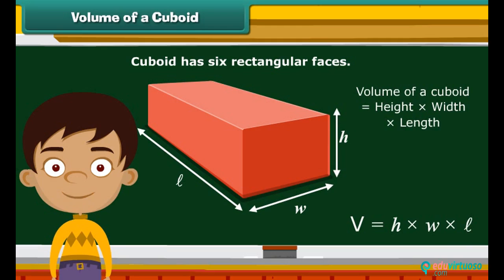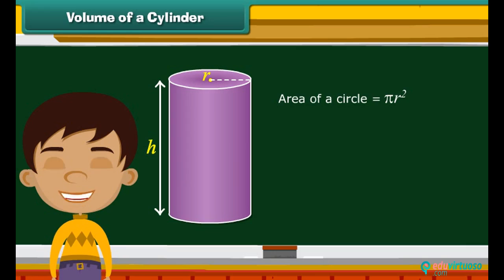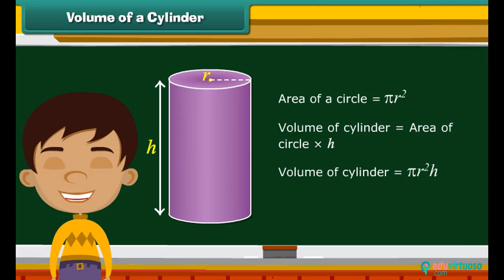A solid that has the shape of an ordinary tin can or a drum is a cylinder. The two bases of a cylinder are circular in shape. We know area of a circle is equal to pi r squared. For calculating volume, we will multiply area of a circle with the height. So the volume of cylinder is equal to pi r squared times H.